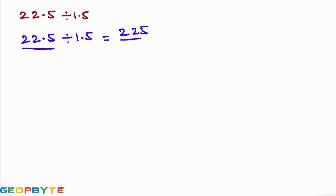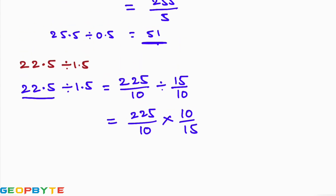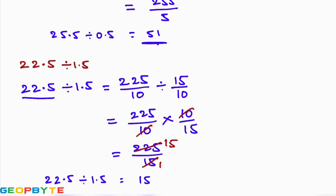In the second number also, after the decimal point there is only one digit, so we divide by 10, giving 15 by 10. This becomes 225 by 10 into 10 by 15. The 10s cancel, giving 225 by 15. Since 15 fifteens are 225, the result equals 15. So 22.5 divided by 1.5 is 15.